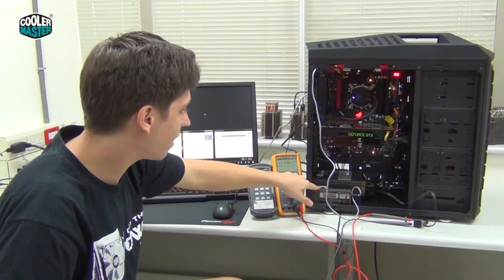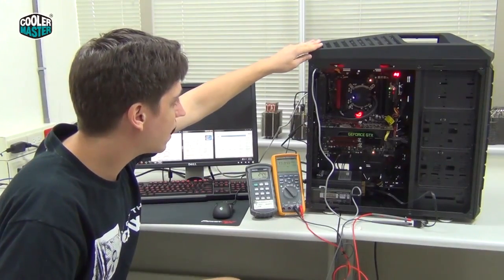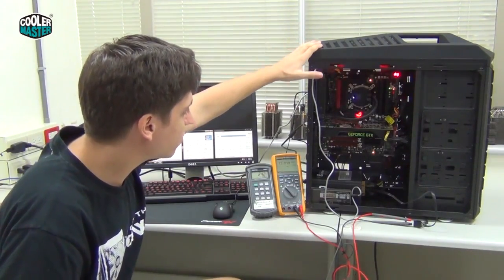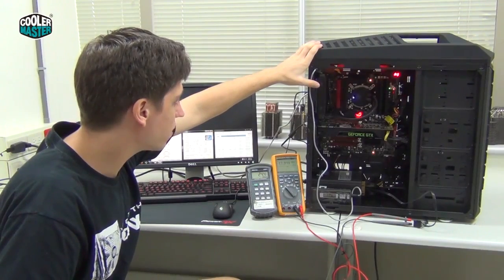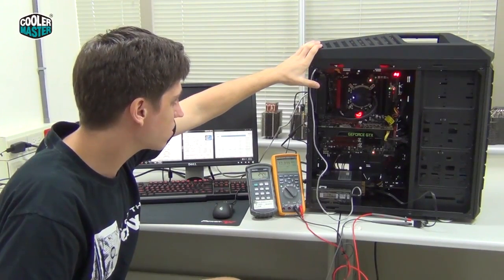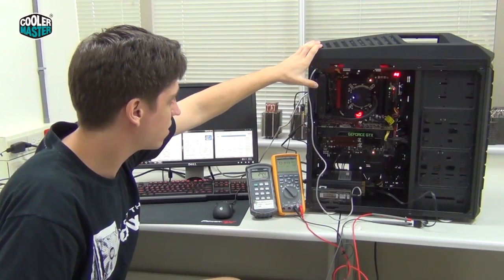Cooler Master Silent Pro Platinum 1000W and we have a 3570K, overclocked with unlocked multiplier to 4.2, 4.6, 4.8, or 4.9 depending on the settings we test it with.